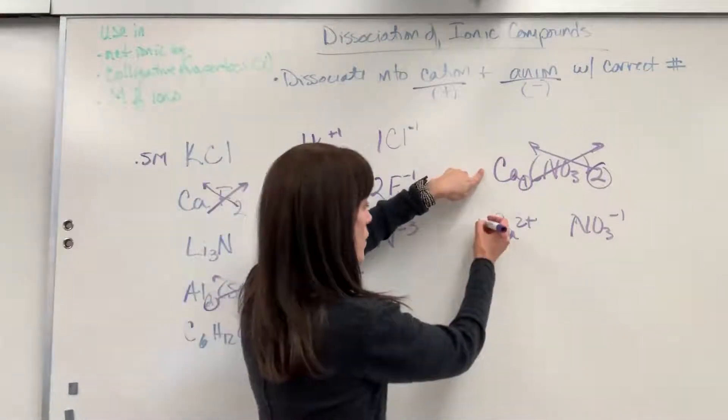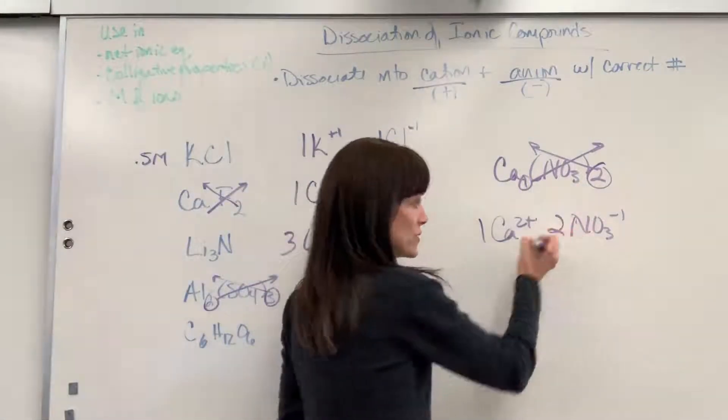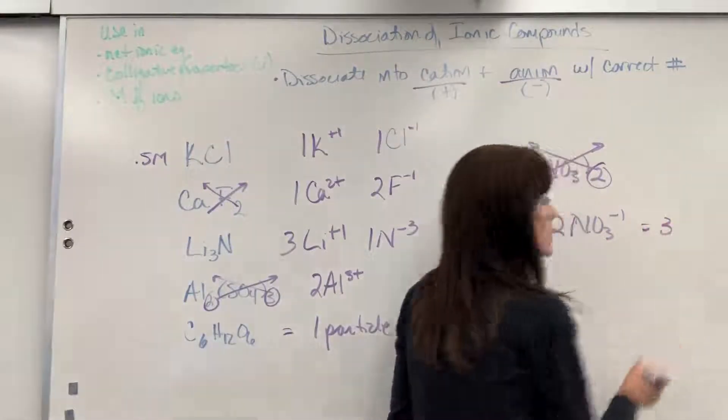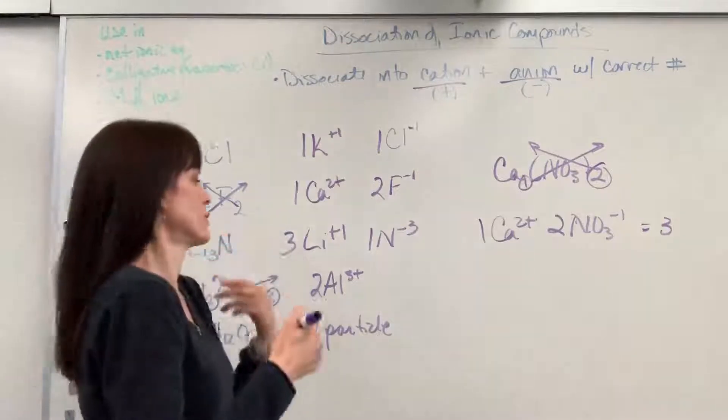Now how many do you have of each? We've got one calcium and two nitrates. So how many total ions? Three. We've got three.